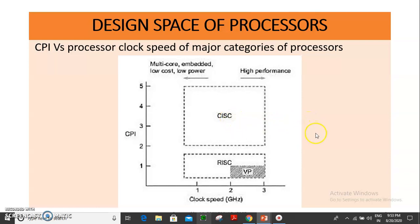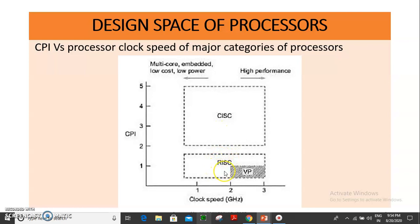This is a category of processor families. We categorize the processor by CPI — Cycles Per Instruction — and clock speed. The categories are CISC (Complex Instruction Set Computer), RISC (Reduced Instruction Set Computer), and VP (Vector Processor).